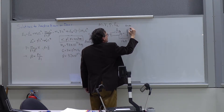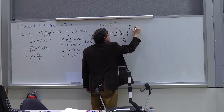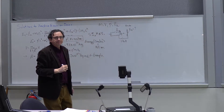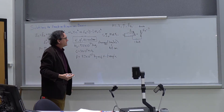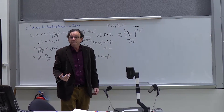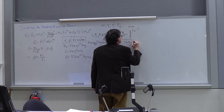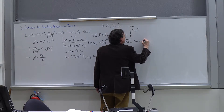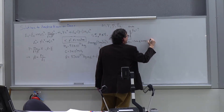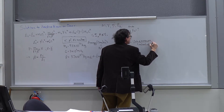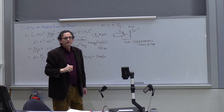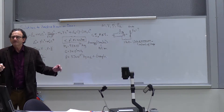How much energy will an electron acquire accelerating across one volt? We go back to the definition of a volt: one volt equals one joule per coulomb — one joule of energy gained per coulomb of charge. That's the definition of a volt.